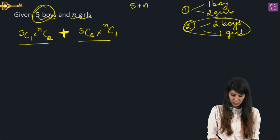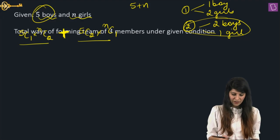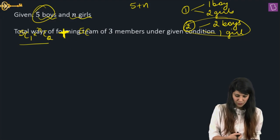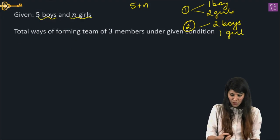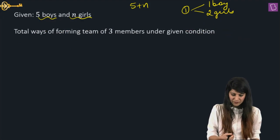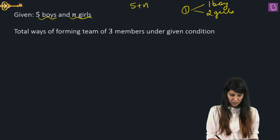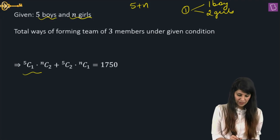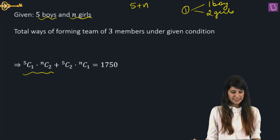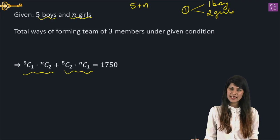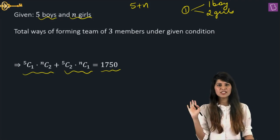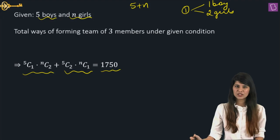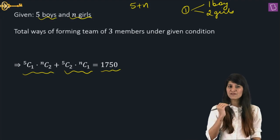So this equals 1750. Total ways of forming a team of three members under the given conditions: 5C1 × NC2 + 5C2 × NC1 = 1750. We just need to solve this equation.